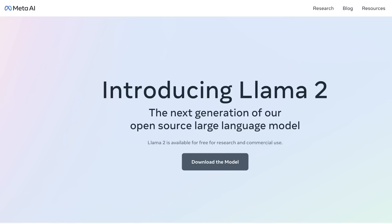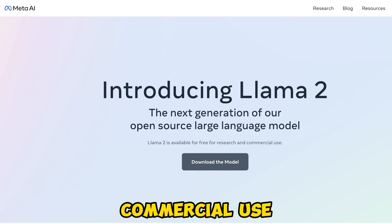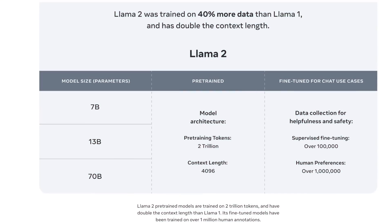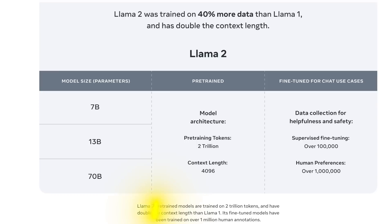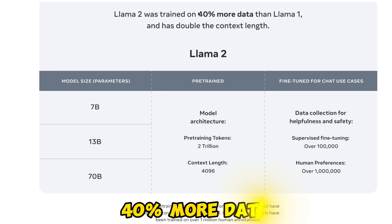Meta just released the second version of Llama, which can now be used in commercial applications. In my earlier video on Llama 2, I covered that there are now three different models, ranging from 7B up to 70B, and they are trained on 40% more data compared to the original Llama 1.